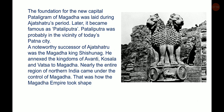A noteworthy successor of Ajatashatru was the Magadha king Shishunaga. He annexed the kingdoms of Avanti, Kosala and Vatsa to Magadha, and nearly the entire region of northern India came under the control of Magadha. That was how the Magadha empire took shape.